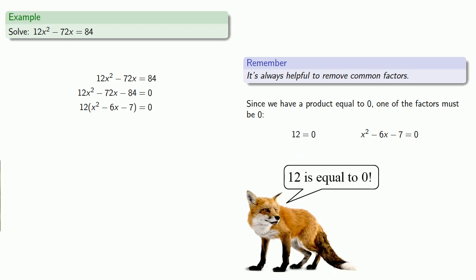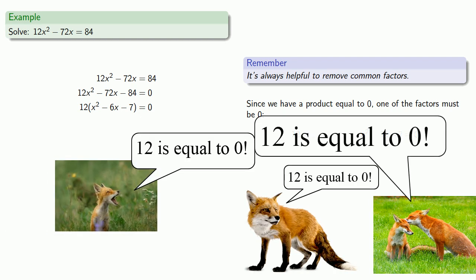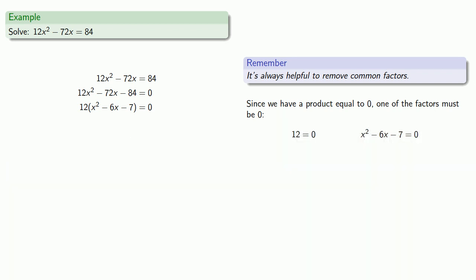Now, despite what this guy says, and even if his friends say it, 12 is not equal to zero. And that means we have to solve this equation, x squared minus 6x minus 7 is equal to zero. So let's try to factor that.